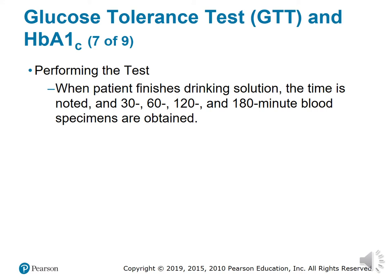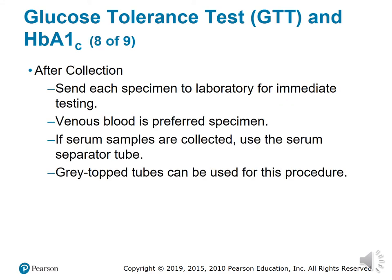When the patient finishes drinking the glucose solution, the time is noted and specimens are obtained at 30-, 60-, 120-, and 180-minute intervals. After collection, send each specimen to the laboratory for immediate testing. Venous blood is the preferred specimen. If serum samples are collected, use serum separator tubes; gray top tubes can also be used.